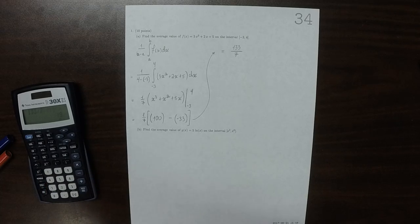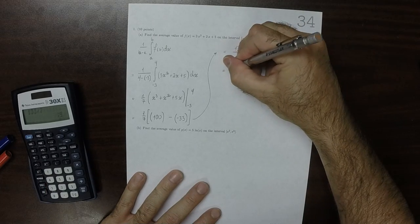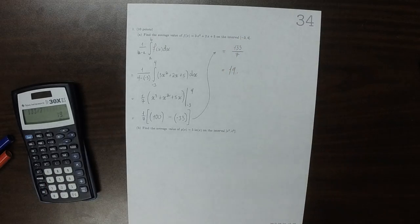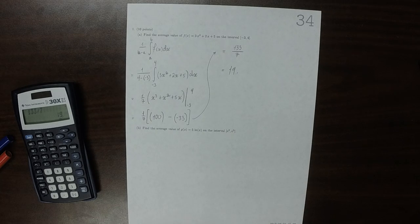Is 133 divisible by 7? It is. So the answer is 19. So the average value is 19.